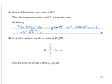Look at the displayed formula for methanol, CH3OH. Draw the displayed formula of ethanol, C2H5OH. So it's going to have a similar kind of structure. It's going to have CH3 and then another CH2. And then an O and an H. And as in the example, every atom and every bond has to be shown.